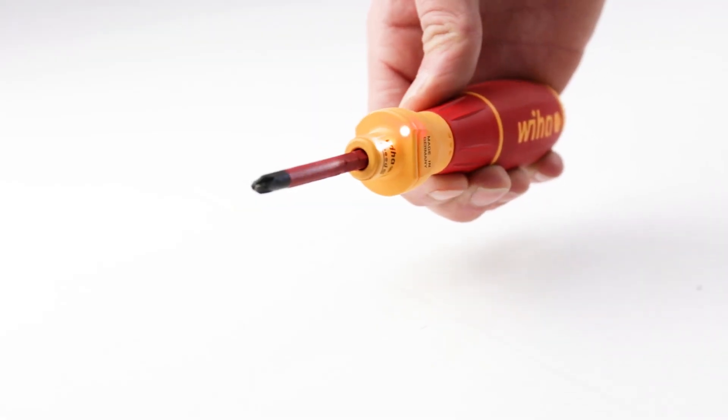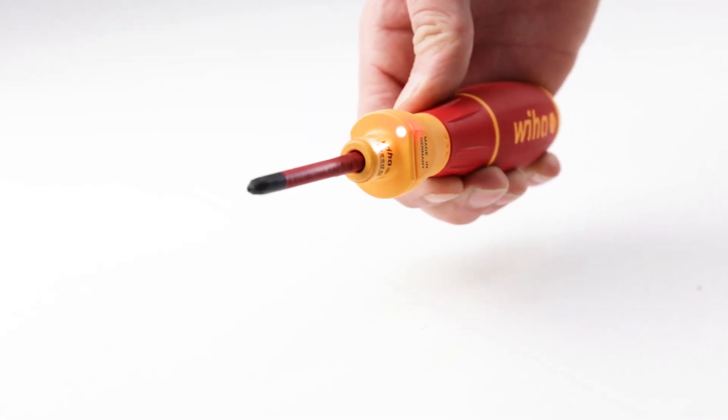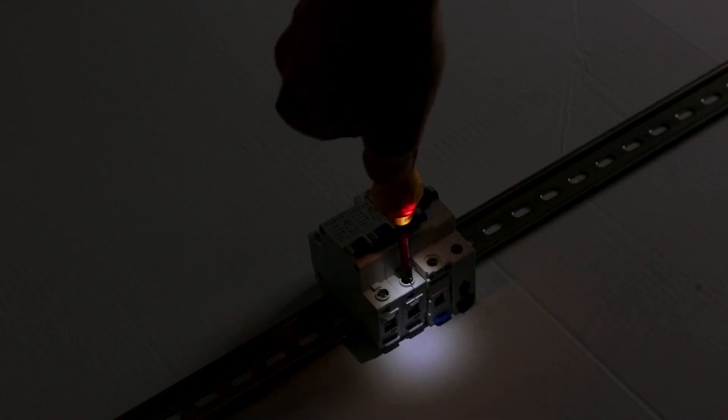Working in the dark or a confined space, the Speed E's built-in light gives you total control to work when and where you need.